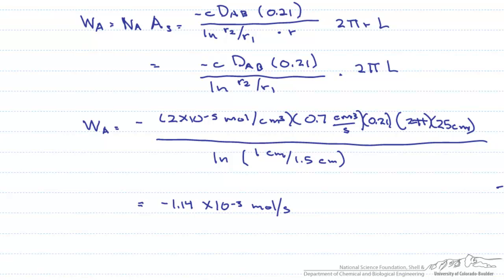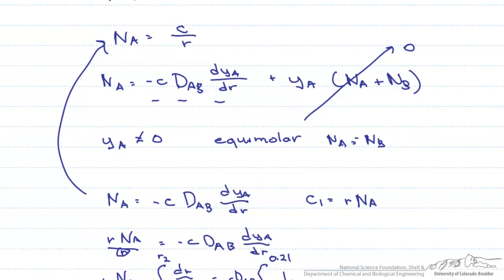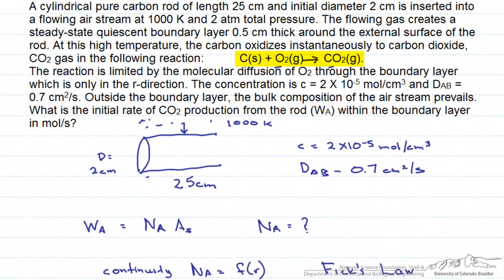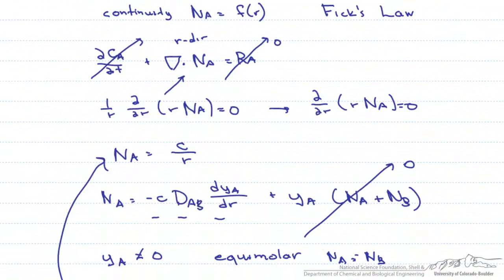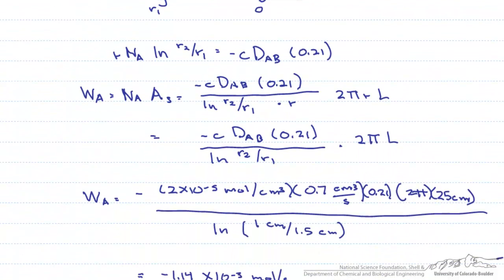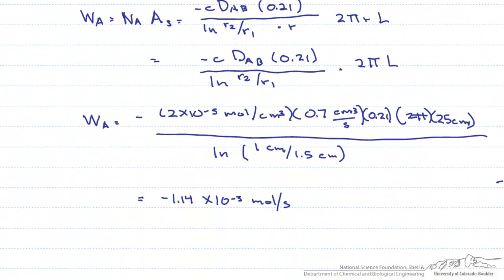But remember what we originally asked for, which is the rate of carbon dioxide production. If we go back and look at our equation, it is the same rate, only a different sign, which makes sense. We are producing CO2 at a rate of 1.14 times 10 to the minus 3 moles per second.